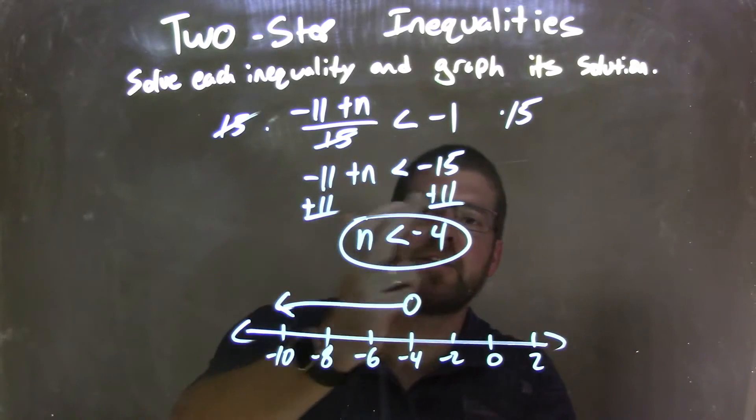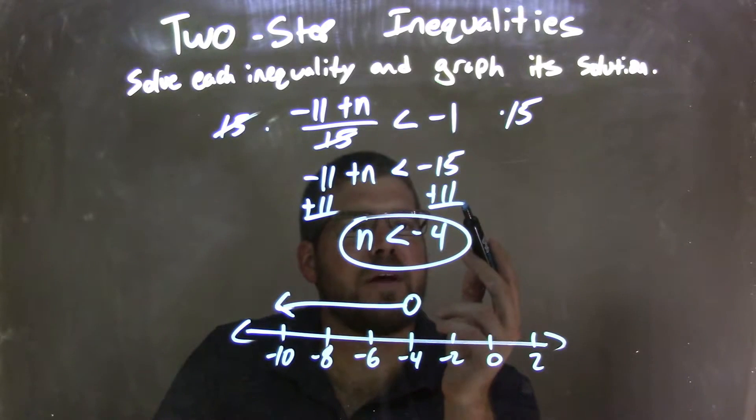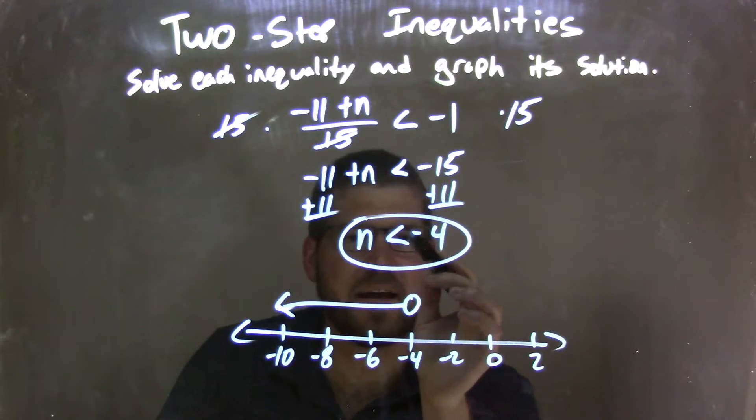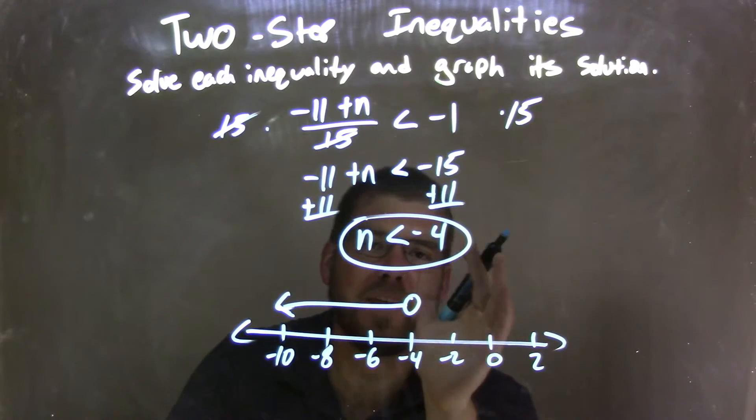Then I added 11 to both sides, giving me n by itself on the left and negative 15 plus 11, which is negative 4, on the right. So again, less than—n is isolated, it's by itself. Fantastic. So we have our final statement here.